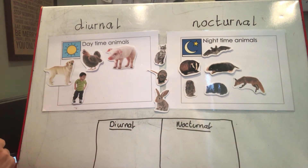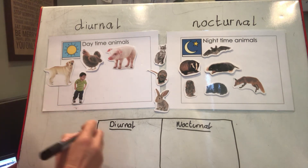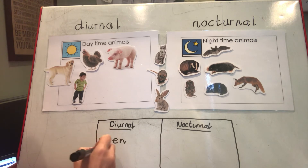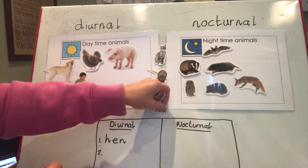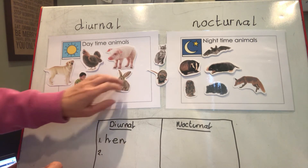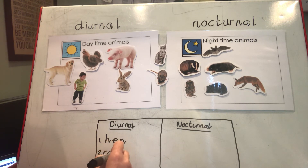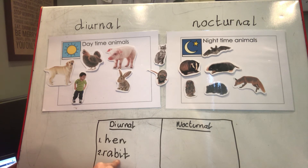For my first diurnal animal I'm going to write 'hen.' I'll segment the word: h-e-n — hen. That's number one on my list. The next one I'm going to write is 'rabbit' — I'll segment it: r-a-b-i-t. Now grown-ups, I've done this phonetically and that's what I want the children to do. Please don't correct their spellings — I just want them to say the sounds and write them down, phonetically correct if not properly spelt.